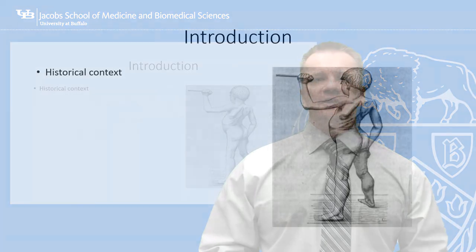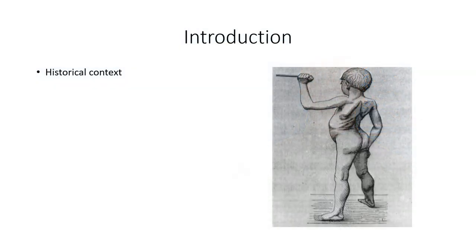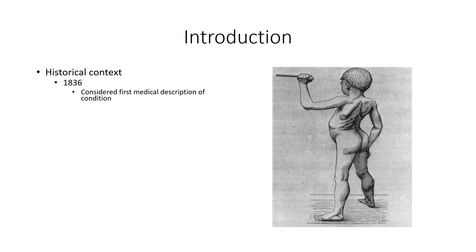We'll start with a bit of historical context. Although the condition has likely existed for millennia, the first medical documentation can be traced back to 1836, with two brothers showing progressive muscle weakness that was well established by 10 years of age. At the time, the disease was not well understood and the weakness was attributed to tuberculosis. Reflecting on the paper today, medical experts generally agree that the patient presentations are consistent with Becker muscular dystrophy, a milder form of Duchenne muscular dystrophy.